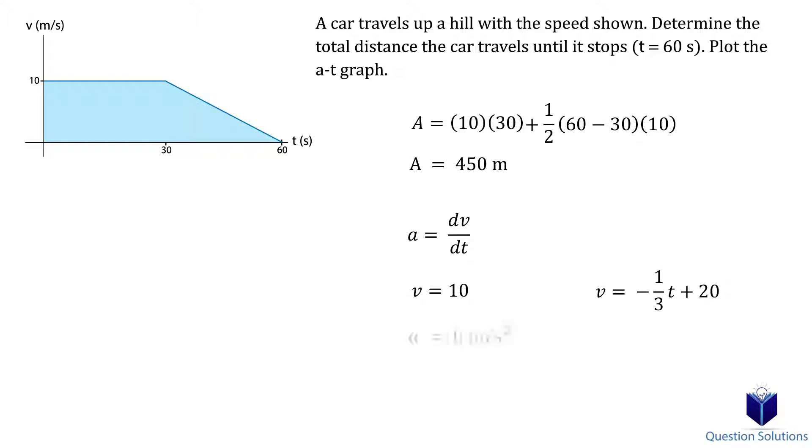Taking the derivative gives us an acceleration of zero meters per second squared for the first segment and an acceleration of negative one-third meters per second squared for the last segment. The graph looks like this.